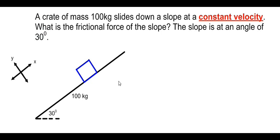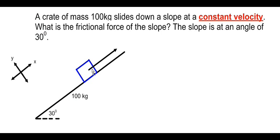What is the frictional force of the slope? We have to first identify the forces acting on the object. Because the box is sliding down the slope, we will have friction acting in the opposite direction — upwards — since the box is going downwards. And the box slides down the slope.